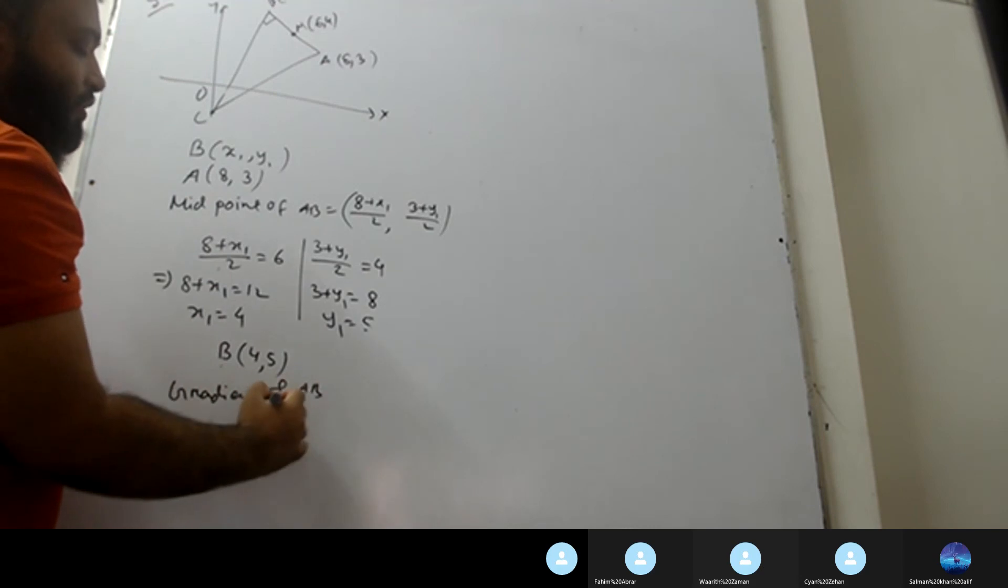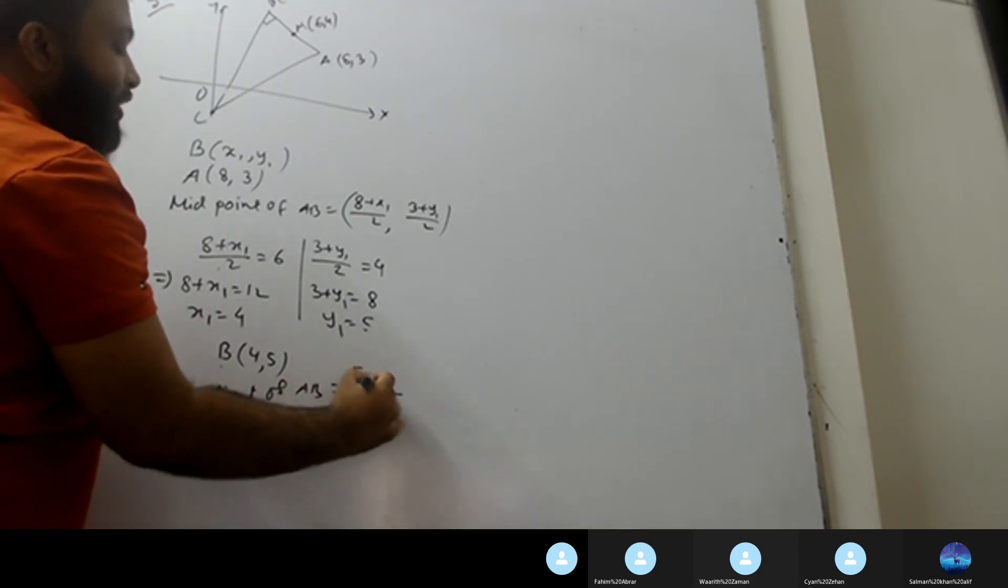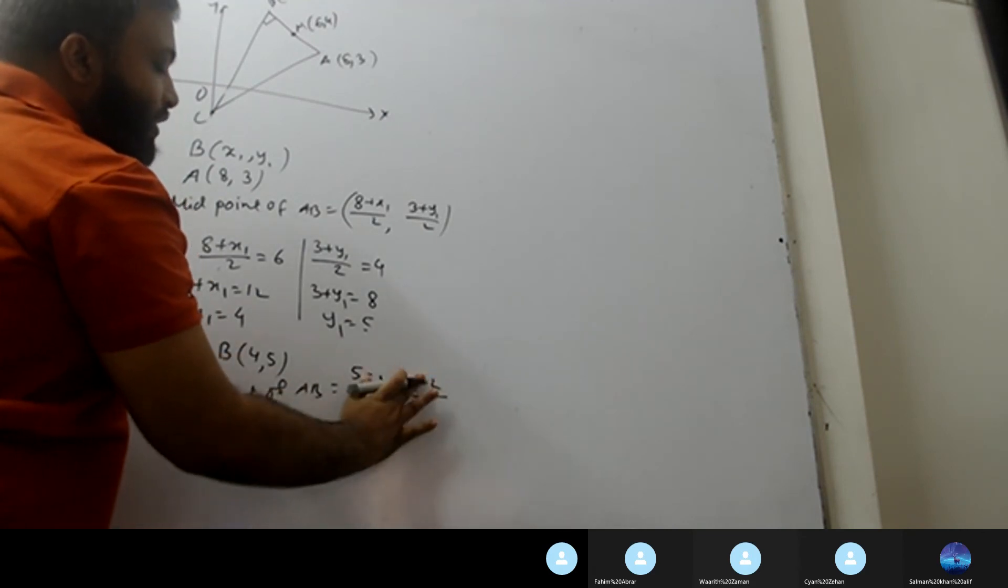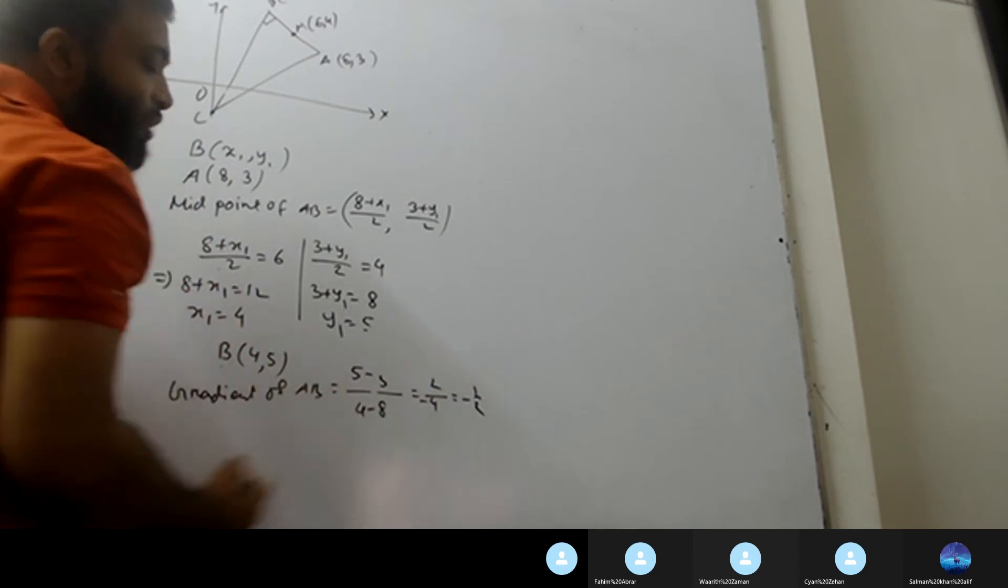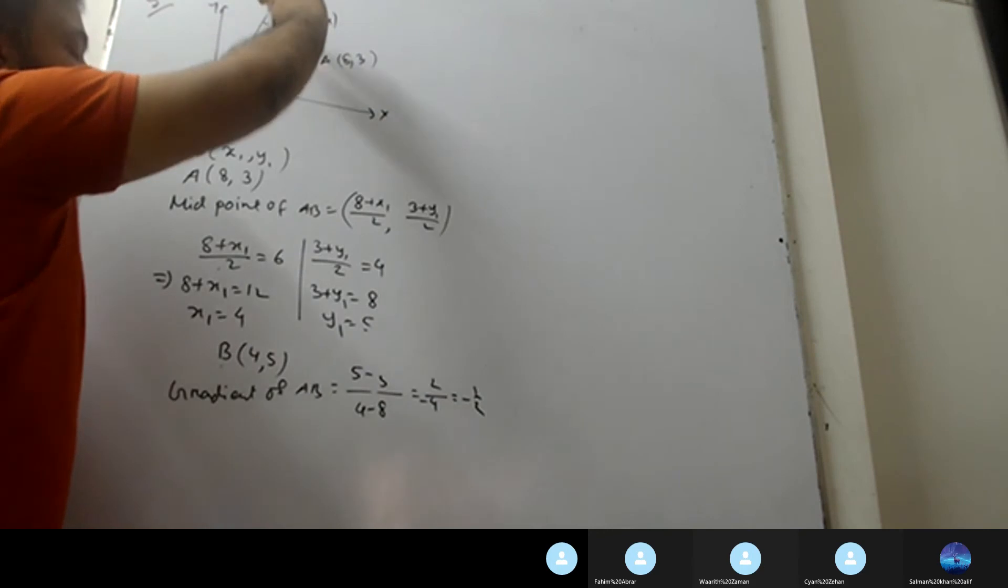Gradient of AB equals y2 minus y1 over x2 minus x1. So 5 minus 3 divided by 4 minus 8. That equals 2 divided by minus 4, which equals minus 1 by 2. So gradient of AB is minus 1 by 2.